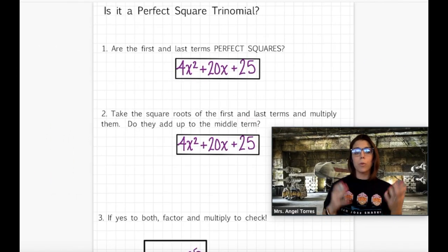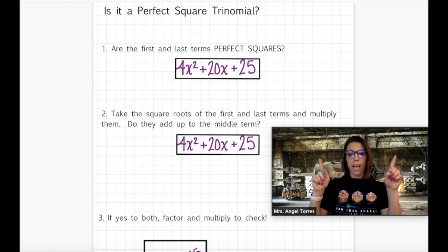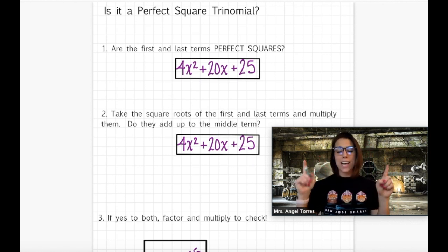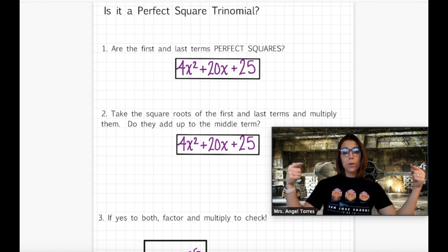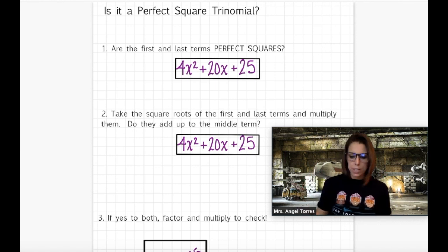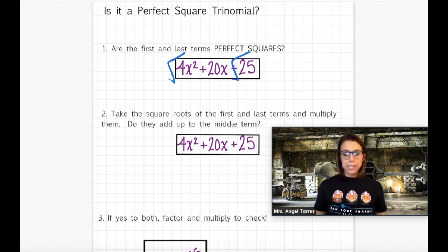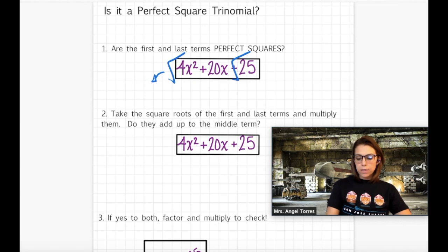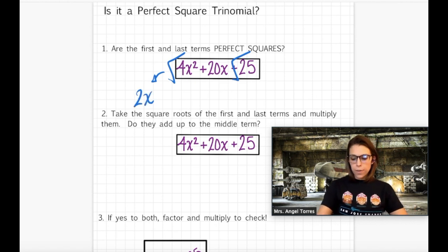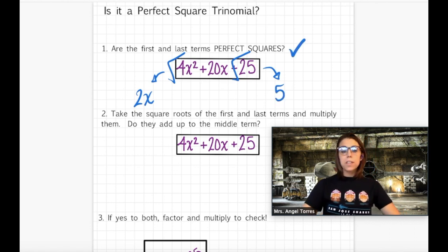To determine if a trinomial is a perfect square, we're going to go through a checklist. Checklist number one: the first and the last terms must be perfect squares, because otherwise you won't have the same two terms in your binomials. Checklist number two: the middle term has to be the sum of those square roots multiplied together. So for 4x squared plus 20x plus 25: the square root of 4x squared is 2x — that is a perfect square. And the square root of 25 is 5 — that's a perfect square. So yes, both of these are perfect squares, meaning we can go on to checklist number two.